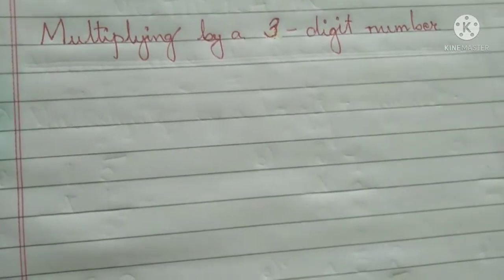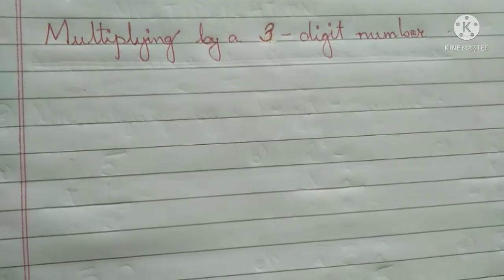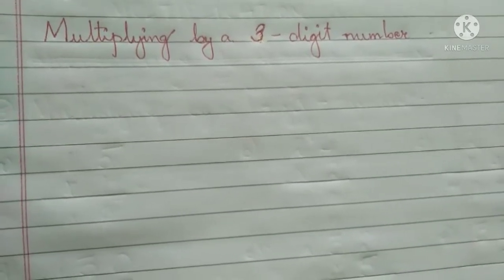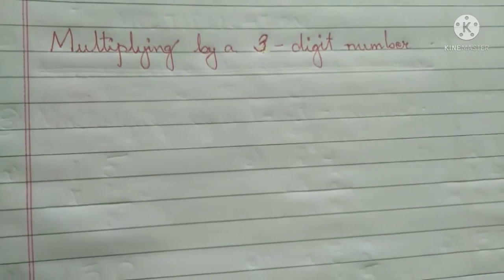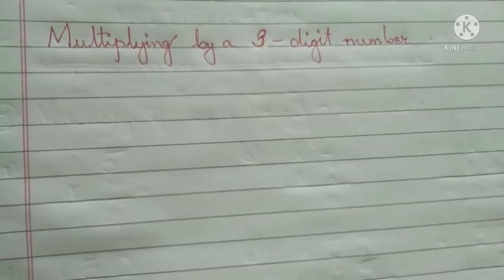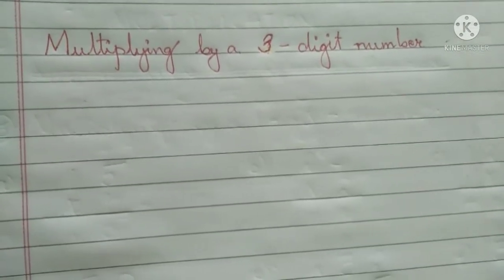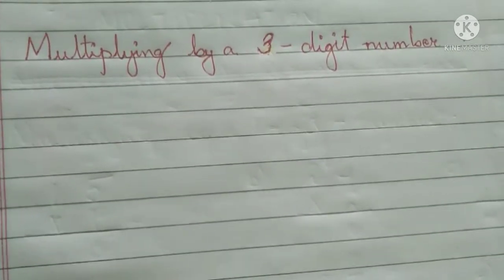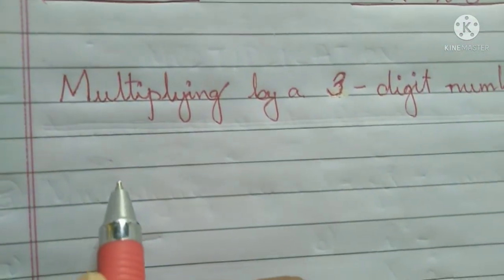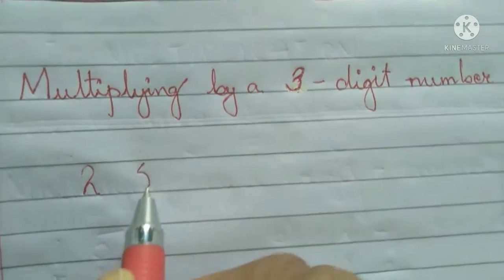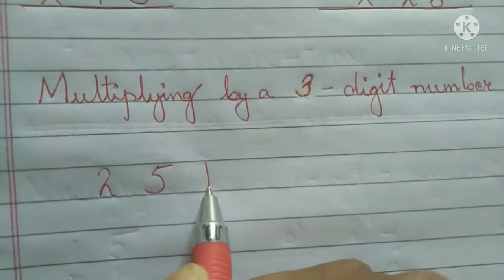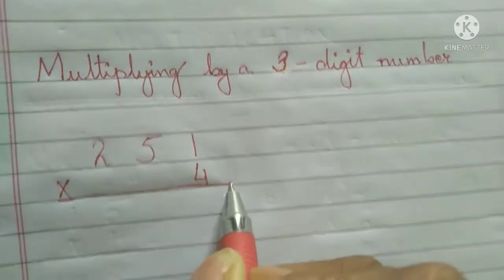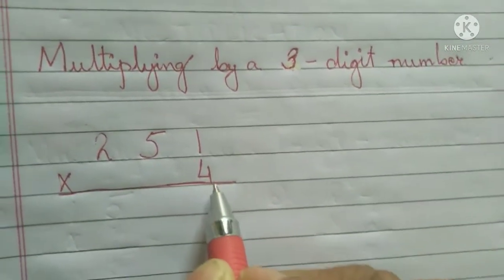Students, last class we did multiplying by a one-digit number, next we did multiplying by a two-digit number, and third we are going to do multiplying by a three-digit number. First, let's just revise with one-digit and two-digit, then we will learn about three-digit. Let's learn how to multiply by a one-digit number once again, just for revision.